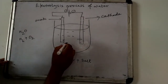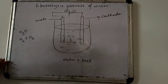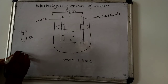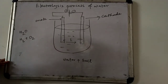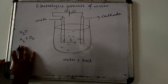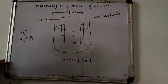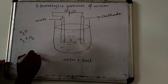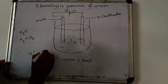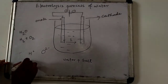Now when current passes through this electrolyte, or water, this water will break down into its constituent particles — that means hydrogen and oxygen.